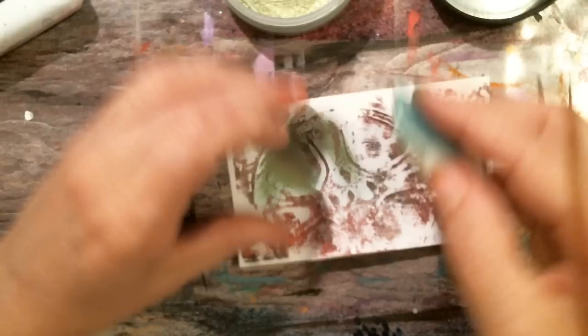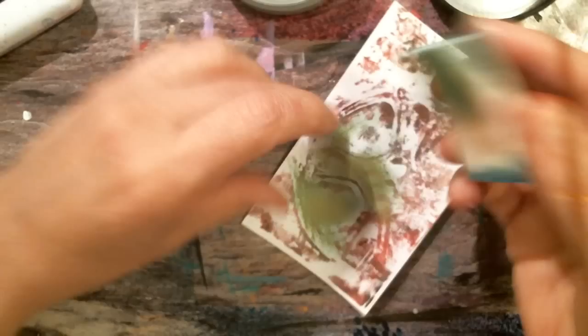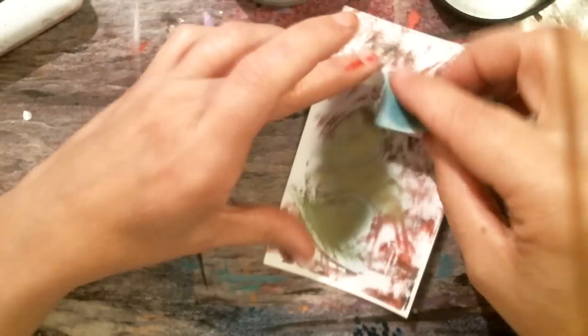I'm using this makeup sponge with my metallic lusters, just kind of using that to paint the wheel on here to make that pop a bit without covering too much.